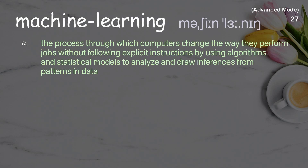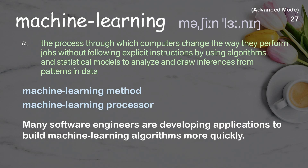Machine learning: the process through which computers change the way they perform jobs without following explicit instructions, by using algorithms and statistical models to analyze and draw inferences from patterns and data. Examples: machine learning method; machine learning processor. Many software engineers are developing applications to build machine learning algorithms more quickly.